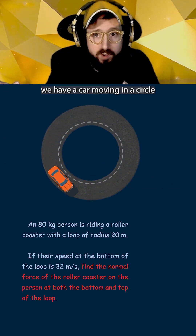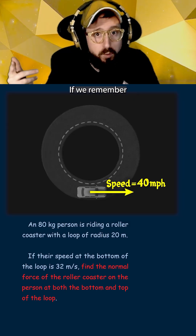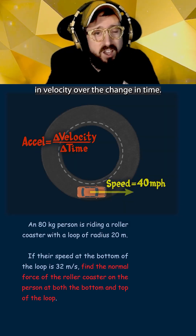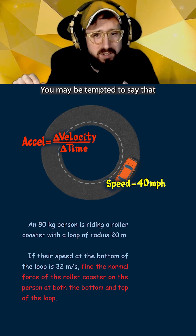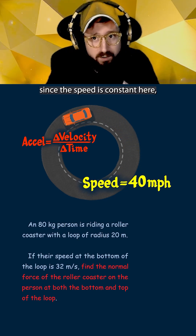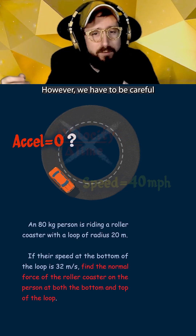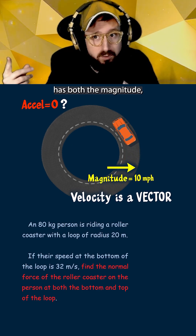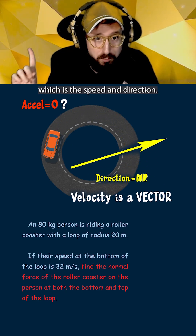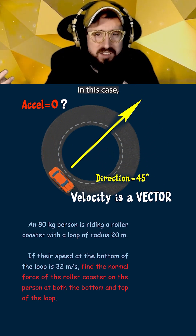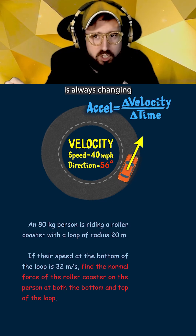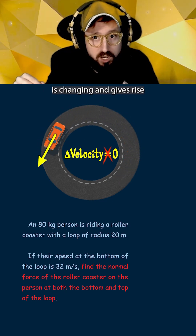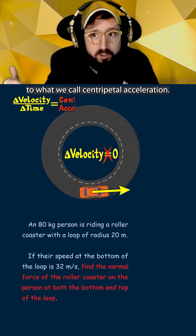Let's say we have a car moving in a circle at a constant speed. If we remember that acceleration is equal to the change in velocity over the change in time, you may be tempted to say that since the speed is constant, there is no acceleration. However, we have to remember that velocity has both magnitude, which is the speed, and direction. In this case, the direction of the car is always changing as it goes around in a circle, which means the velocity is changing and gives rise to what we call centripetal acceleration.